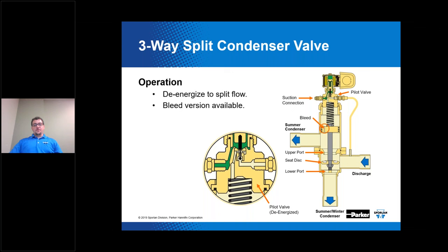When de-energized, the three-way split condenser valve diverts or splits refrigerant flow to two condenser circuits during summer operation — this is considered normal full condenser mode. The refrigerant flow is split evenly between the two halves of the condenser; the seat disk is positioned to allow the flow of discharge gas through both the upper and lower port simultaneously. When you energize the valve, it shifts and diverts all flow to only the summer/winter condenser, closing off the upper port so all flow goes to that single circuit during low ambient operation.